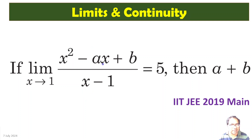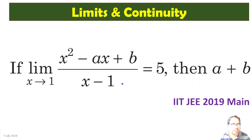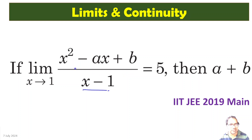Firstly, this is a quadratic equation in the numerator and just a linear one in the denominator. So now, if this limit exists, obviously, (x - 1) should be a factor of the numerator.